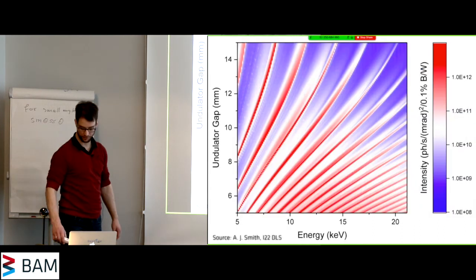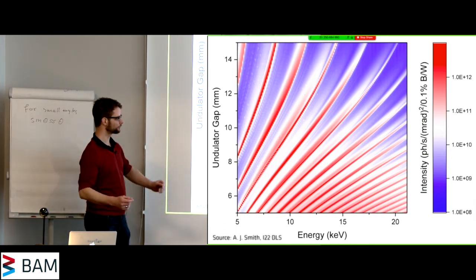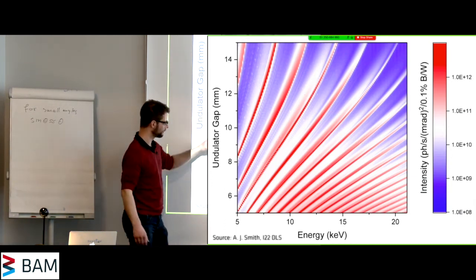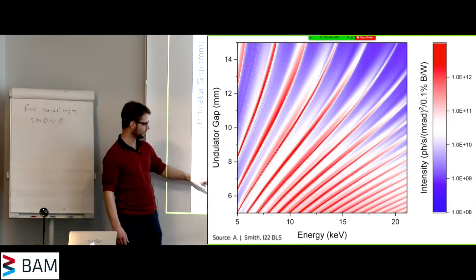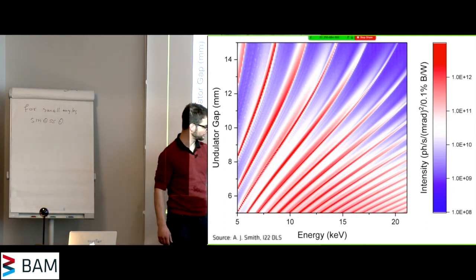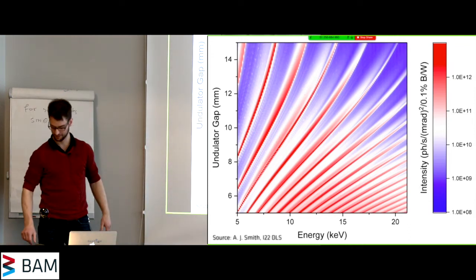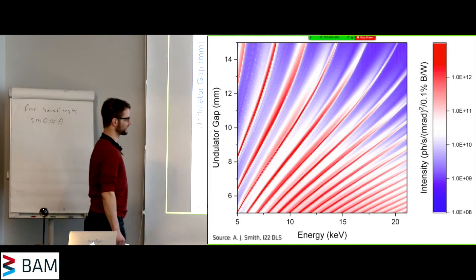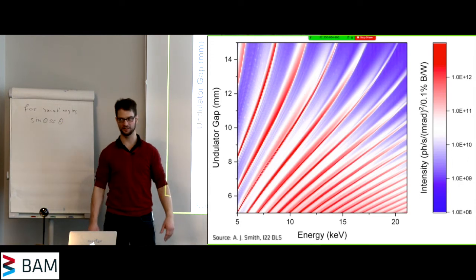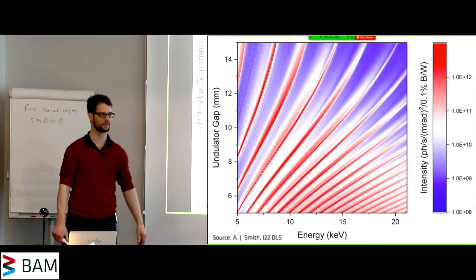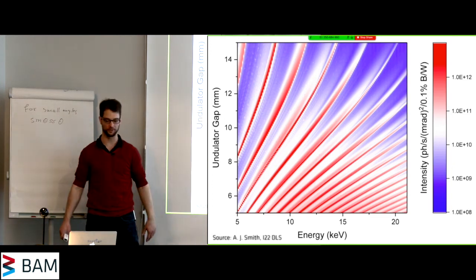So, if you then go to a synchrotron beamline, and they will ask you what energy do you need, and you say 12 kiloelectron volts, then they go into their charts. This is the chart from I-22 beamline at the diamond light source. They go into their chart, and they go to 12 kiloelectron volts, and then they check what gap they need between their magnets to get the most efficient generation of X-rays out of that. Of course, you can also go to higher harmonics, but these are usually lower in intensity, and this is then avoided. But in principle, the higher harmonics are also available for you.